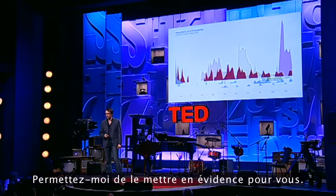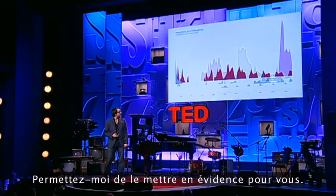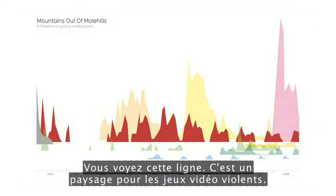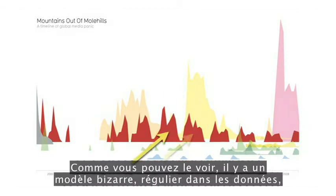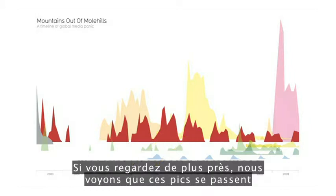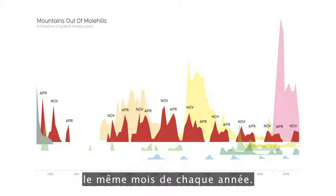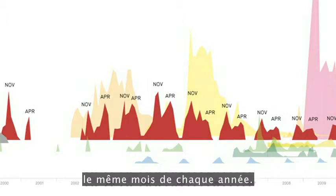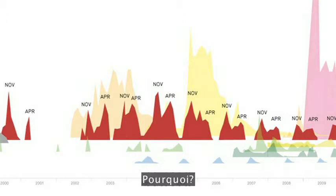See this line? This is a landscape for violent video games. As you can see, there's a kind of odd, regular pattern in the data — twin peaks every year. If we look closer, we see those peaks occur at the same month every year. Why?